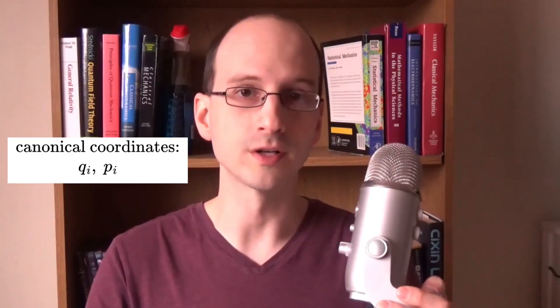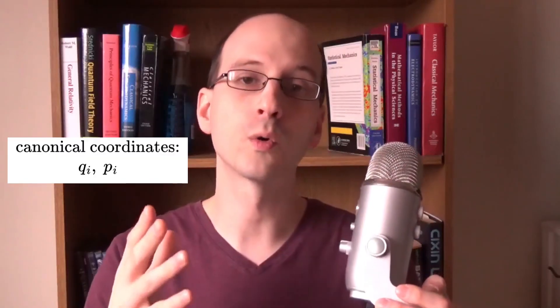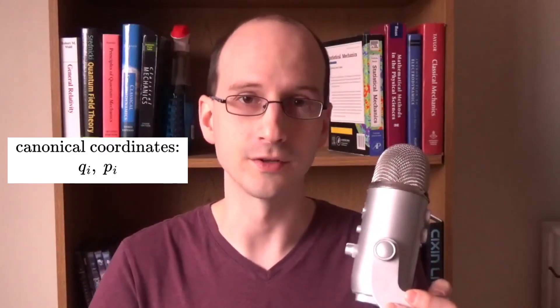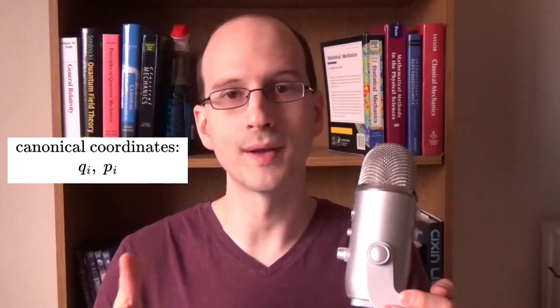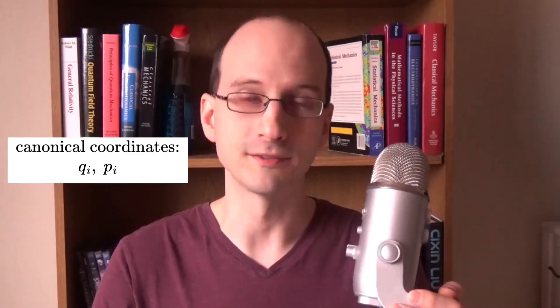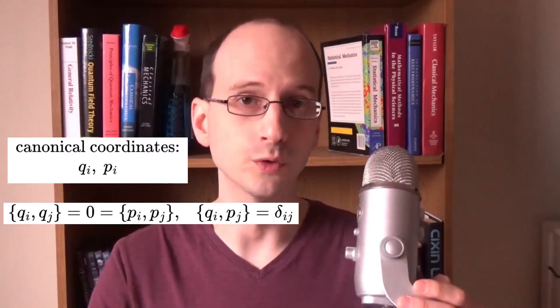There's one more application of Poisson brackets to look at before we end this video to test whether sets of canonical coordinates are valid. Remember, canonical coordinates are generalized versions of position and momentum. They're orthonormal, which means they can be changed individually without affecting the others. For those of you who like a little more math terminology, they are orthonormal basis vectors in phase space. Any valid set of canonical coordinates obeys rule 5.